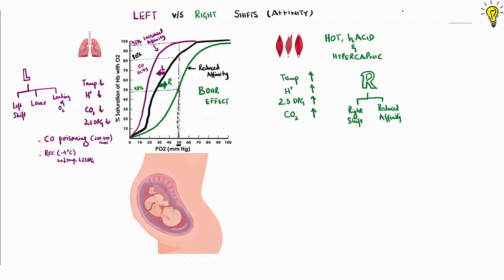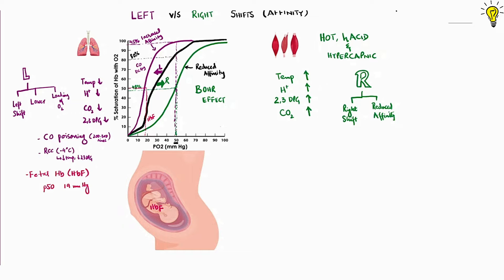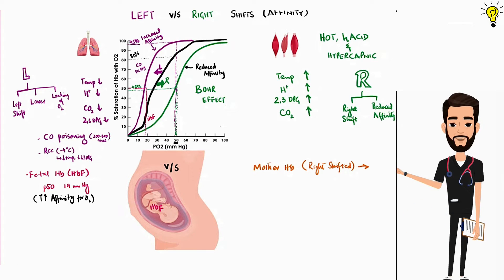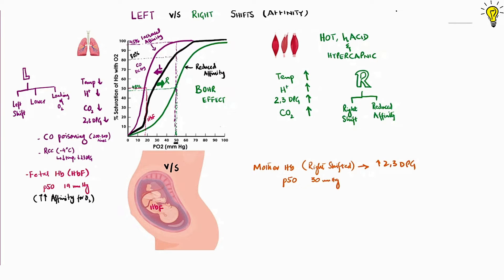Lastly, the fetal hemoglobin, also called the HbF, has P50 of 19 mmHg compared to 27 mmHg for normal hemoglobin. Meaning it is highly left shifted or more affinity for oxygen. On the other end, mother's hemoglobin is slightly right shifted or reduced affinity because of raised 2-3 DPG levels. With P50 of around 30 mmHg oxygen pressures. So whenever fetal hemoglobin faces off with the mother hemoglobin in placental interface, the fetal hemoglobin steals away oxygen more avidly. And mother offloads the oxygen easily to the fetus. Such a beautiful work of nature.